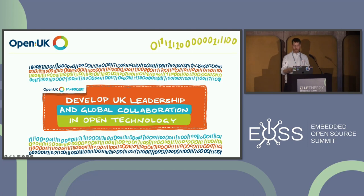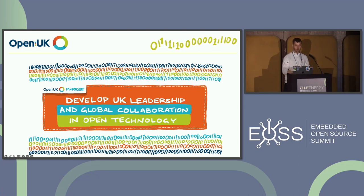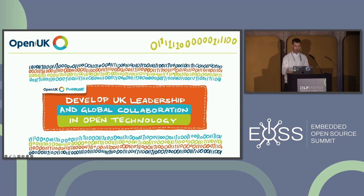Open UK is a not-for-profit company which champions open technology, open source software, open hardware and open data in the UK. But our vision extends beyond the borders of the UK and we believe in the power of global collaboration to create a more open and sustainable digital world. We also collaborate quite closely with Open Forum Europe, the Open Invention Network and other organisations around the world.